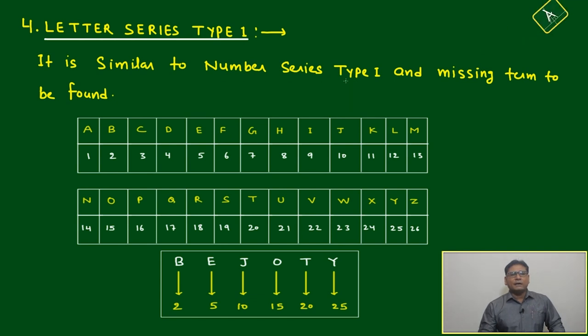You have to find the missing term, but the only thing you have to remember or try to write very fast is the alphabetical position of 26 alphabets of the English alphabet, like A is one, B is two, C is three.